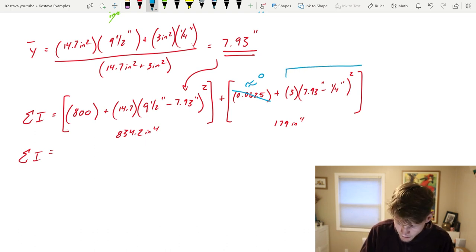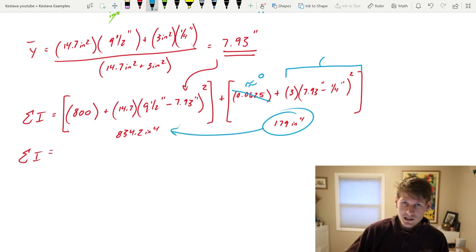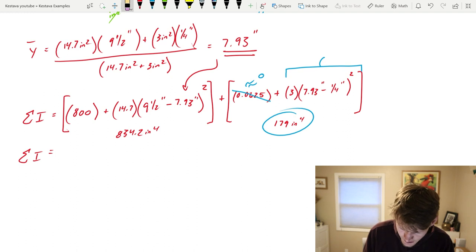But that doesn't mean that you just ignore the moment of inertia contributing from the plate because you still have this whole other component of the equation that spit out 179 inches to the fourth, which is a solid 25% increase in your moment of inertia of your system. So that's huge, thumbs up. That just provided a lot of additional capacity. Remember that, think about it.